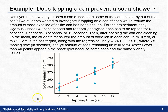You can see that we're given the scatter plot, with tapping time on our horizontal axis and soda remaining on our vertical axis. We were also given the regression line: y-hat equals 248.6 plus 2.63x, where x is the tapping time and y-hat is the predicted amount of soda remaining.